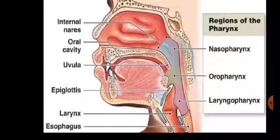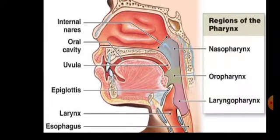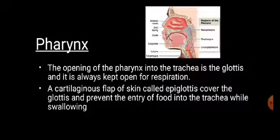In order to prevent the food from entering into the trachea, the glottis — that is, the opening of the trachea — is closed by a flap-like cover called the epiglottis. So the cartilaginous flap of skin called the epiglottis covers the glottis, which is the opening of the trachea, to prevent the entry of food into the trachea while we are swallowing food.